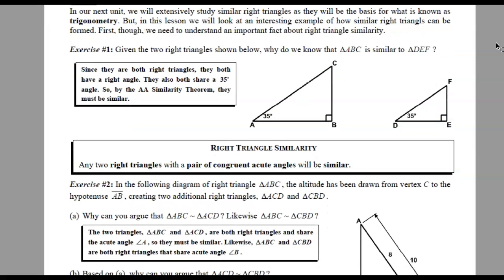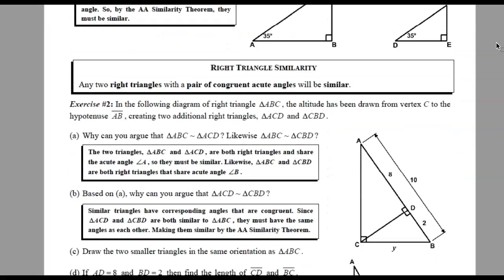Exercise two. In the following diagram of right triangles, we have triangle ABC surrounding. We have an altitude drawn from point C to hypotenuse AB. That creates two additional right triangles. We have triangle ACD up here and triangle CBD down here. Why can we argue that ABC is similar to ACD? We did something very similar to this in a previous lesson.